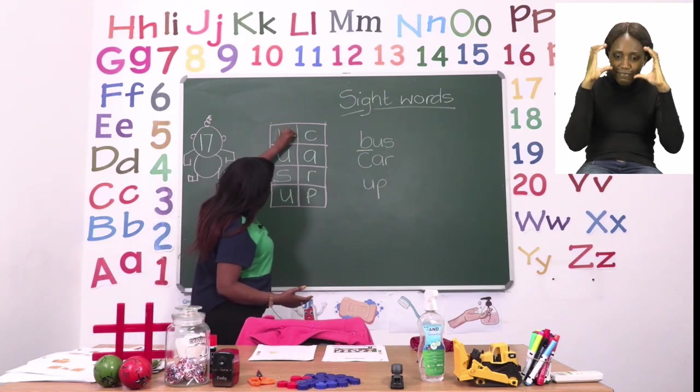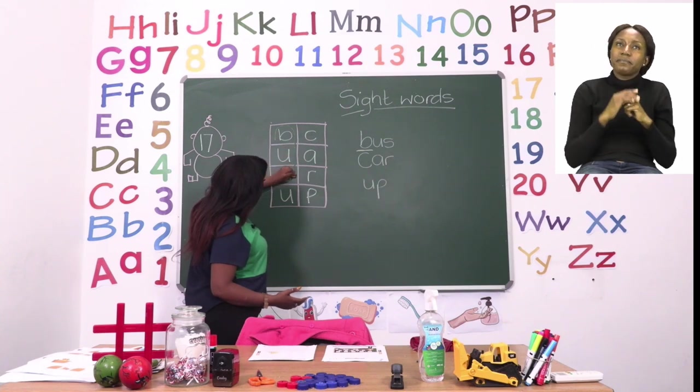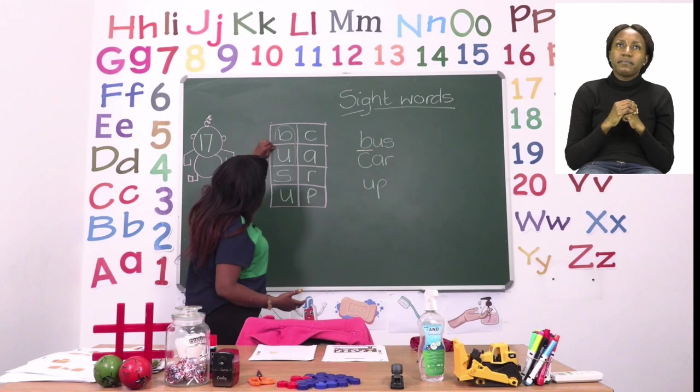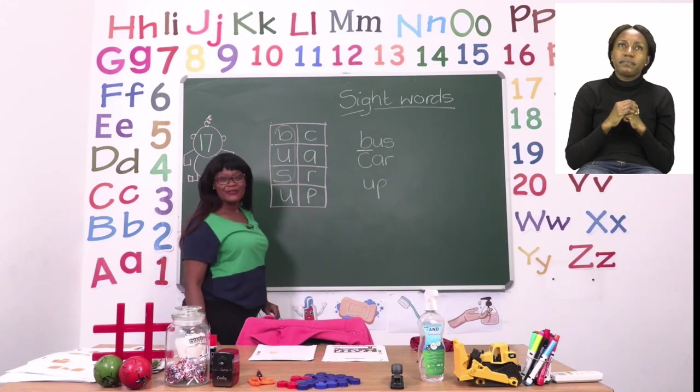So we're going to circle it slowly boys and girls. Make sure that we can still see the letters. Round and up. Round and up then you connect it to where you started. Good job everyone.